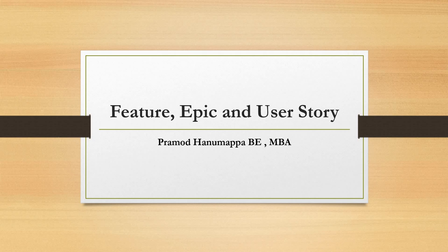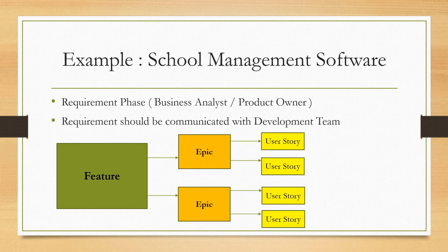Say for example there is a business need to develop a school management software. For this there are mainly two very important stages: one is the requirement phase, and another is that those requirements should be communicated with the development team. Generally in these two phases either a business analyst or a product owner will be involved.